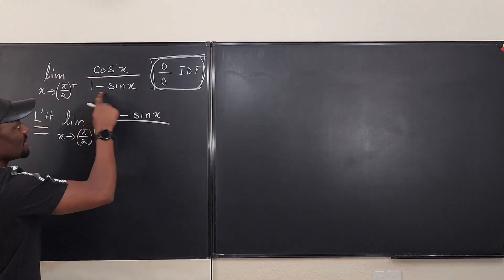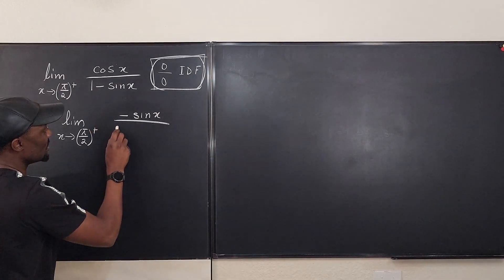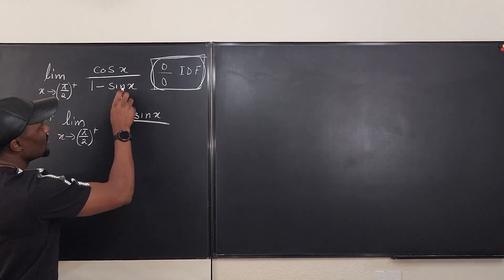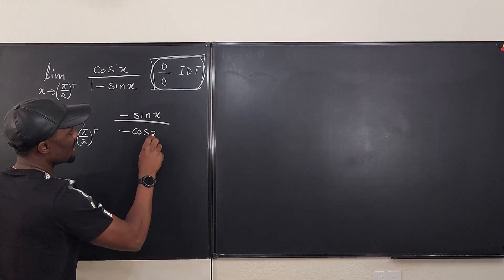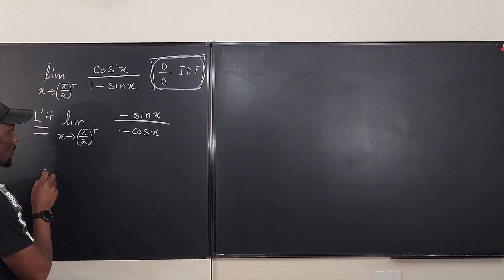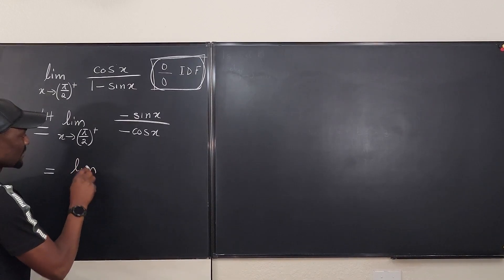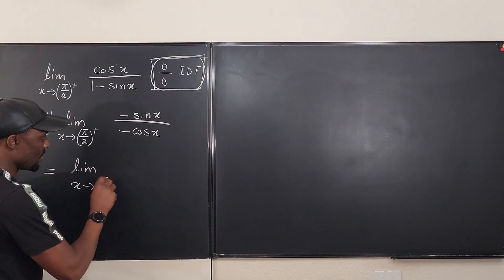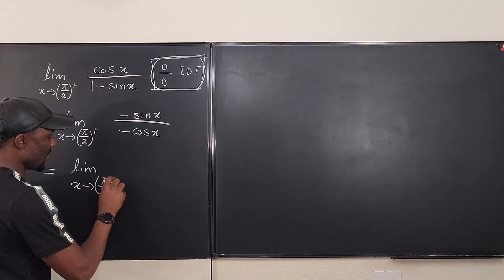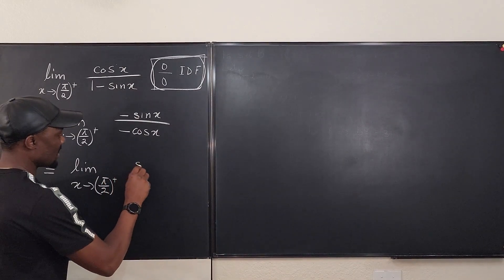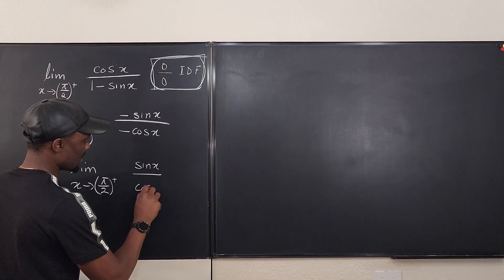And the derivative of the denominator is going to be 0 minus the derivative of sine x, which is negative sine x. That's what we have. So what we have is equal to the limit as x goes to pi over 2 from the right of sine x over cosine x.